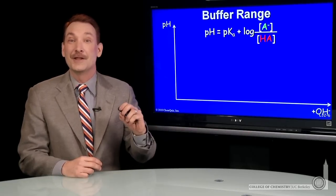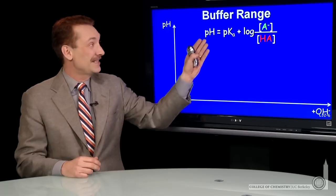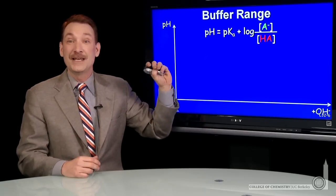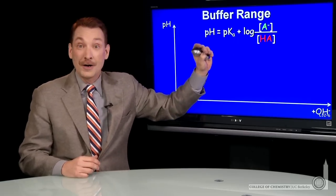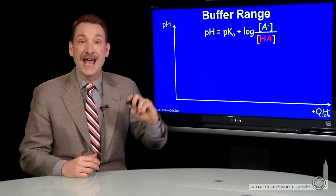We can calculate the pH in the buffer region using the Henderson-Hasselbalch expression. That says the pH is equal to the pKa plus the log base 10 of the ratio, weak base to weak acid form.